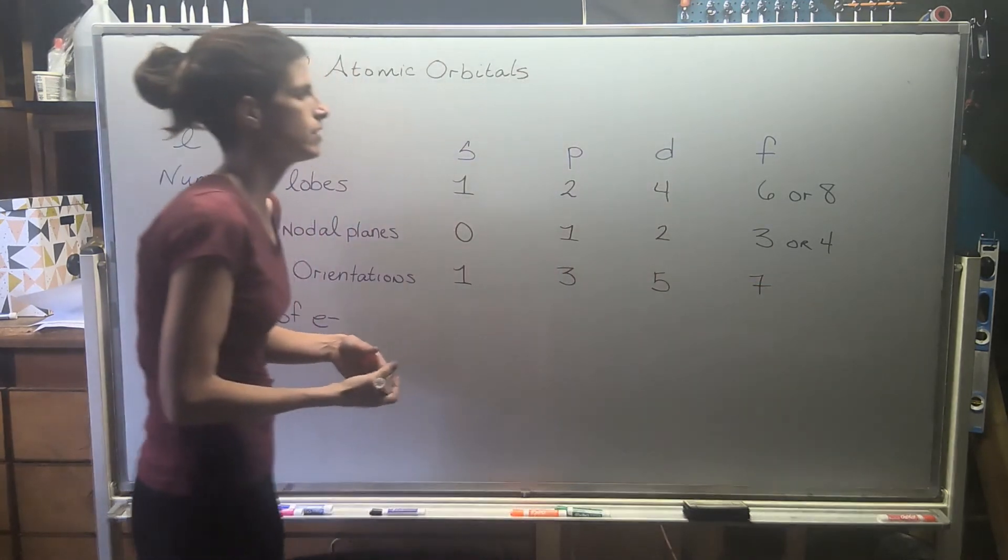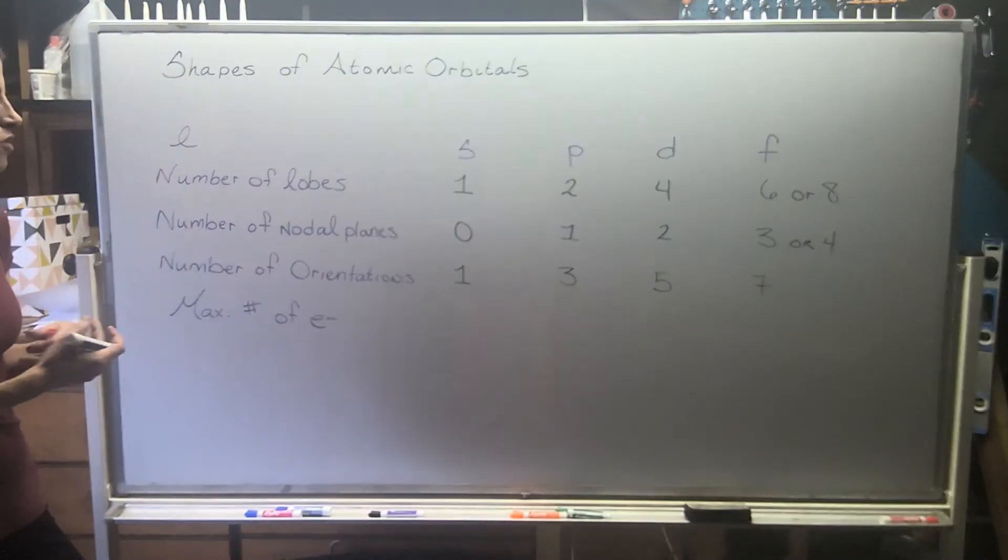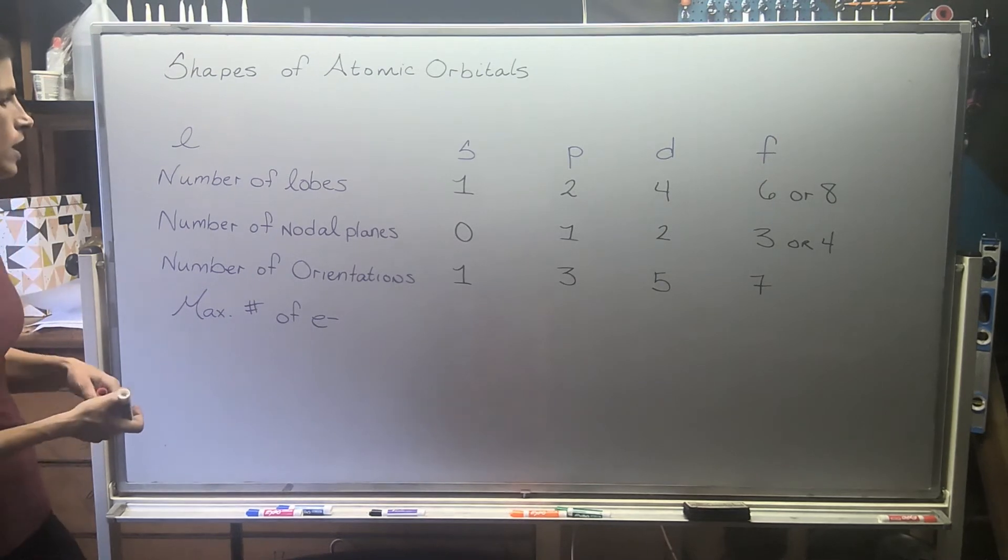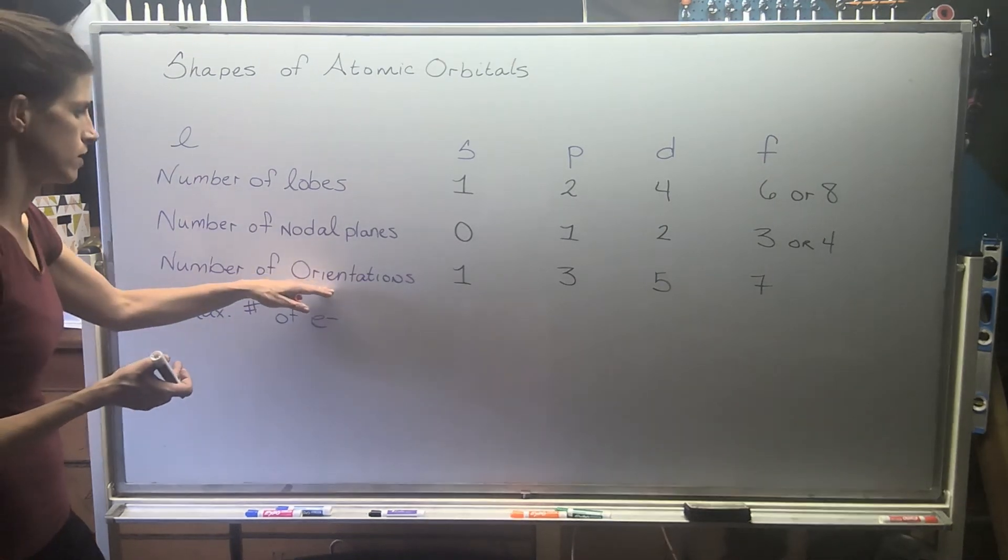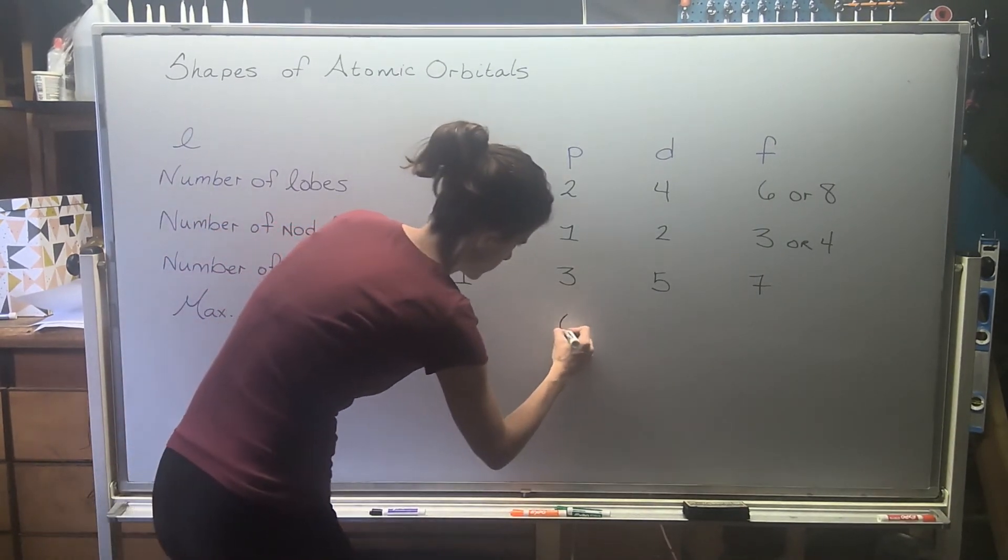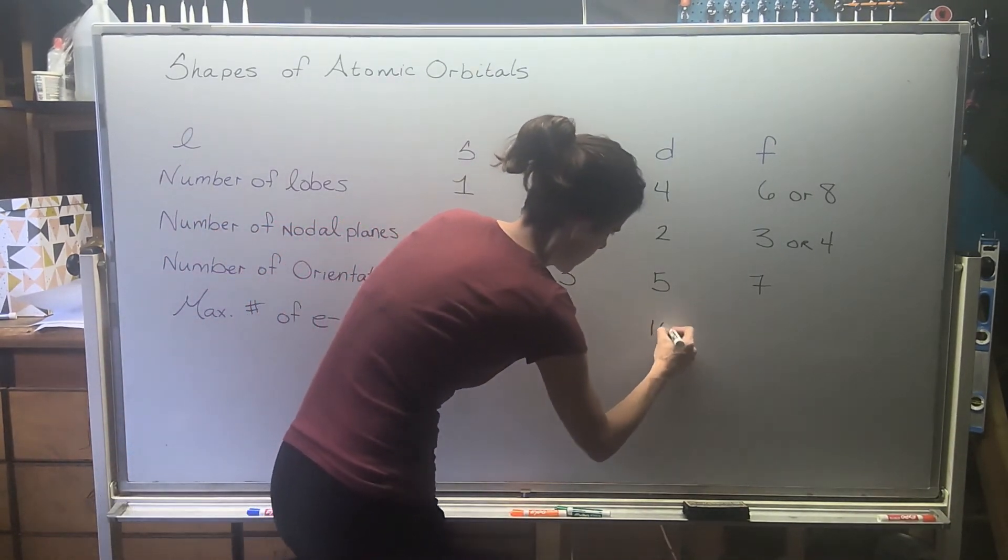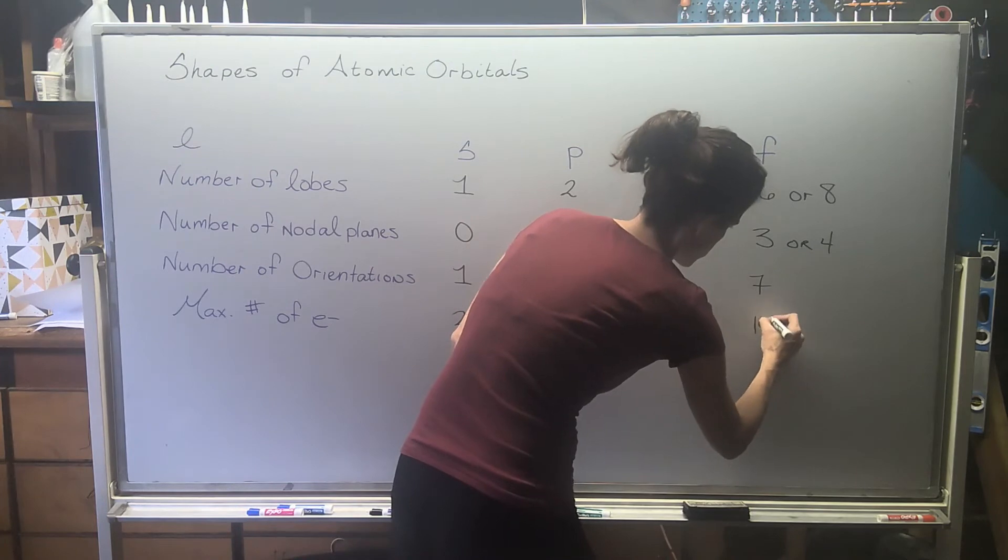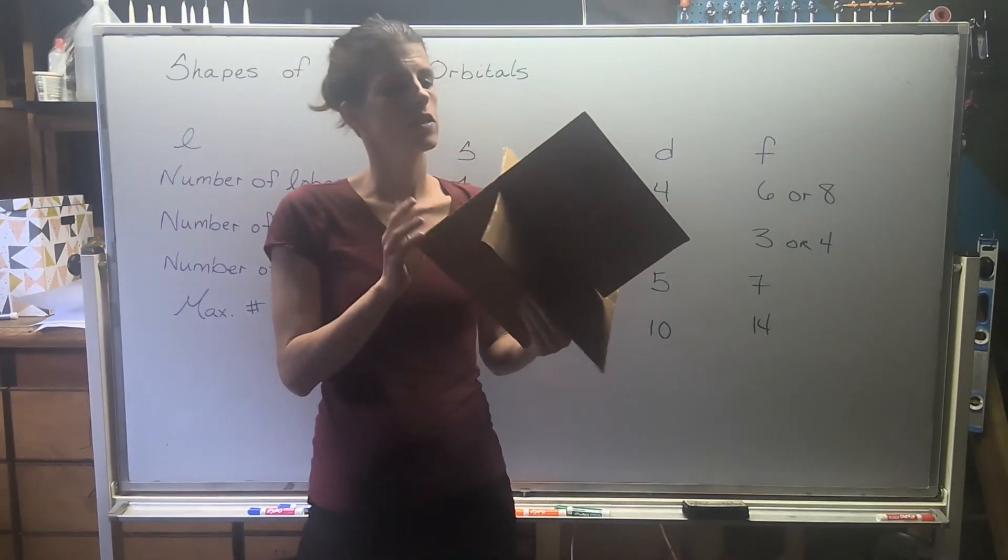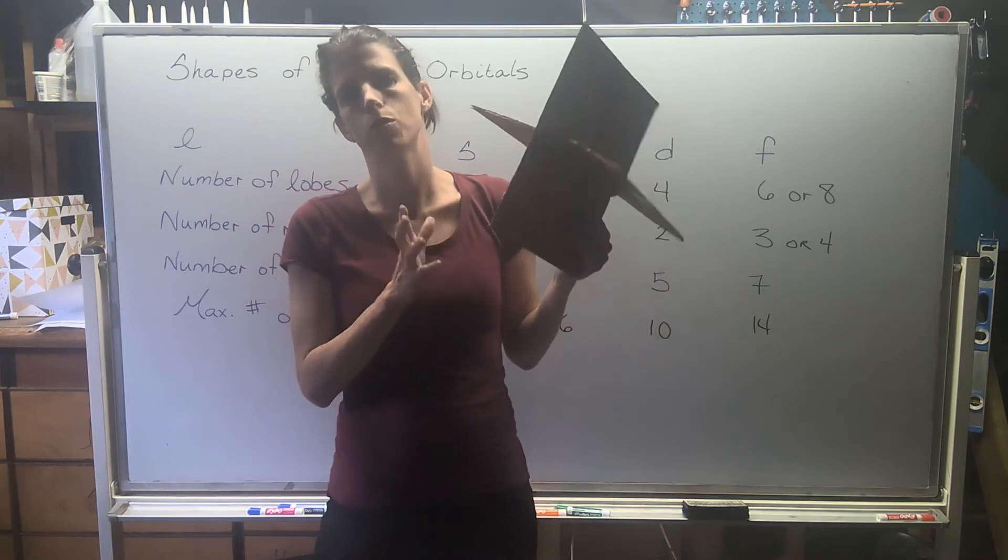The max number of electrons that each subshell can hold is related to the number of orientations. So here we're going to do two, six, ten, and fourteen.